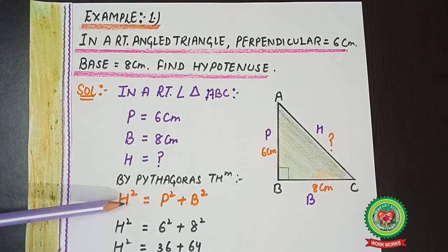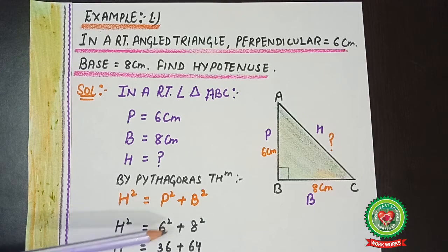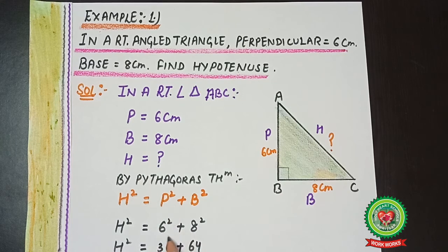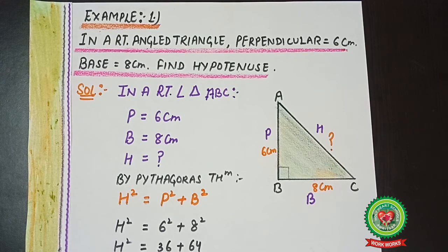By Pythagoras theorem: H² = P² + B². We write H as it is because we don't have its value yet. Substituting the values of P and B: H² = 6² + 8² = 36 + 64 = 100. So H² = 100. To find H (not H squared), we shift the square to the other side, which changes it into a square root.